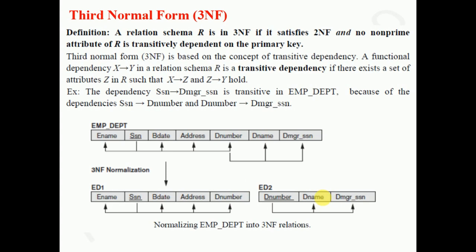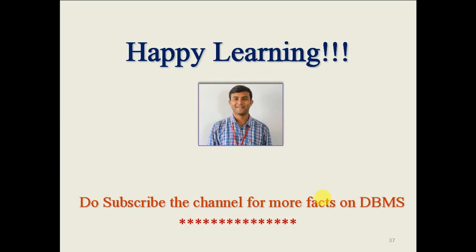In the next lecture, we are going to learn about Boyce-Codd Normal Form, which is stricter than third normal form, along with how to get rid of multi-value dependencies via 4NF and joint dependencies via 5NF. Hope you all understand. Thank you for watching, happy learning — please subscribe to my channel for more content on DBMS.